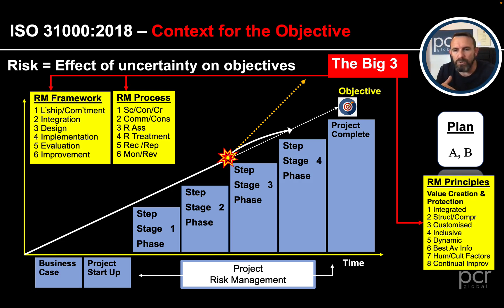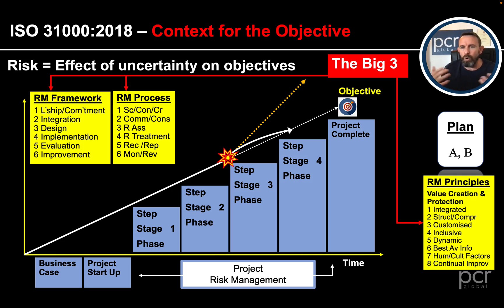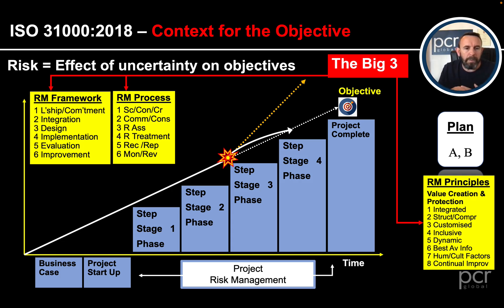Moving to the risk management framework - what we would design and build surrounding our project or organization. The framework has six areas with leadership and commitment at the center, and integration across the organization. When designing the framework we consider: do we undertake projects, what are our operations, what are the strategic objectives, and how are functions set up internally. We implement it, evaluate how well it's working - similar to PDCA - and continuously improve.